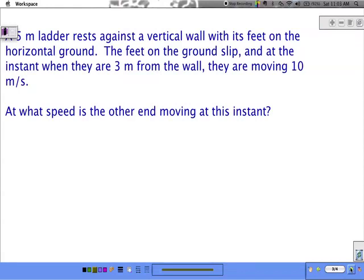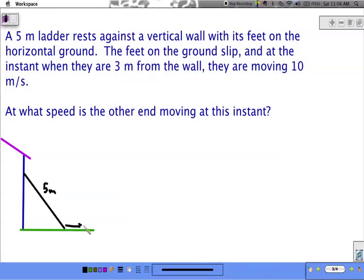The last piece in this is related rates. Here we have a ladder resting against the house. Classic problem. So we've got our grassy grass down here. We've got a blue house with a pink roof. And we have a black ladder against the house. The black ladder is 5 meters long. And as we're climbing this, the bottom starts slipping away at a rate of 10 meters per second. At what speed is the other end moving at this instance?